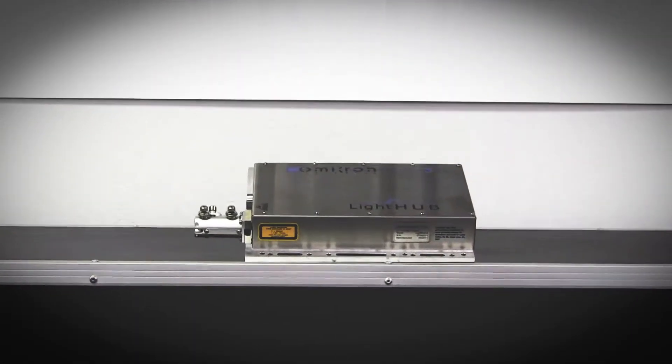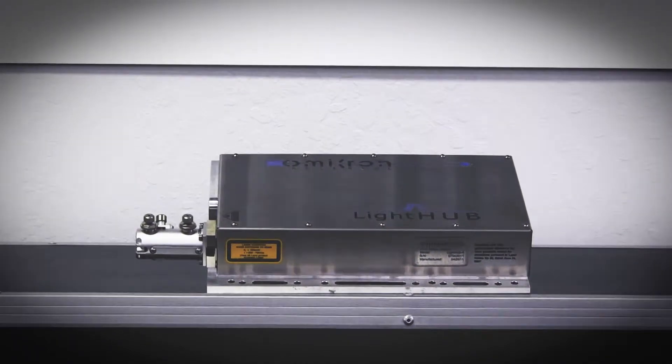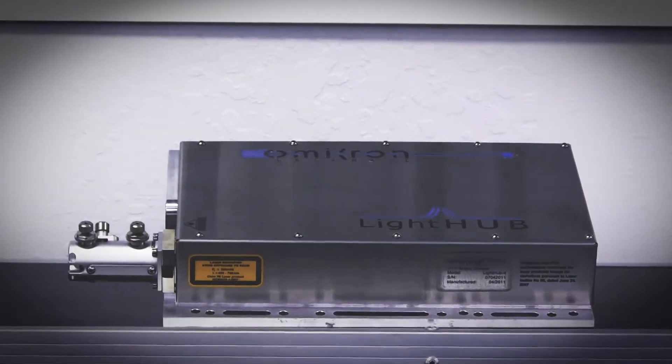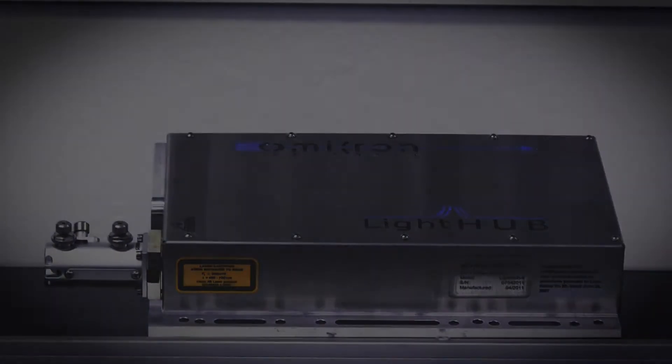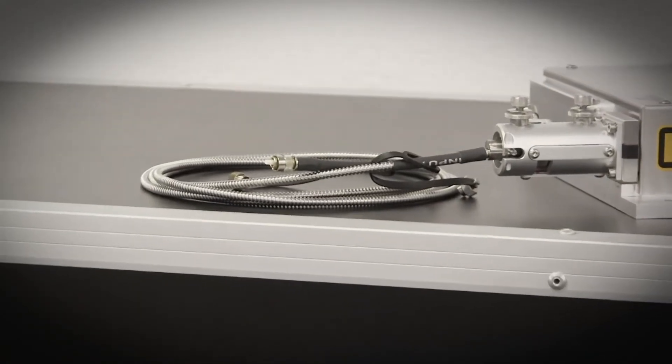The Light Hub is a multi-laser light engine that's capable of combining up to six different wavelengths into a single output. The single beam output can then be used either free space or coupled into a fiber optic cable to transport the laser light into your application.